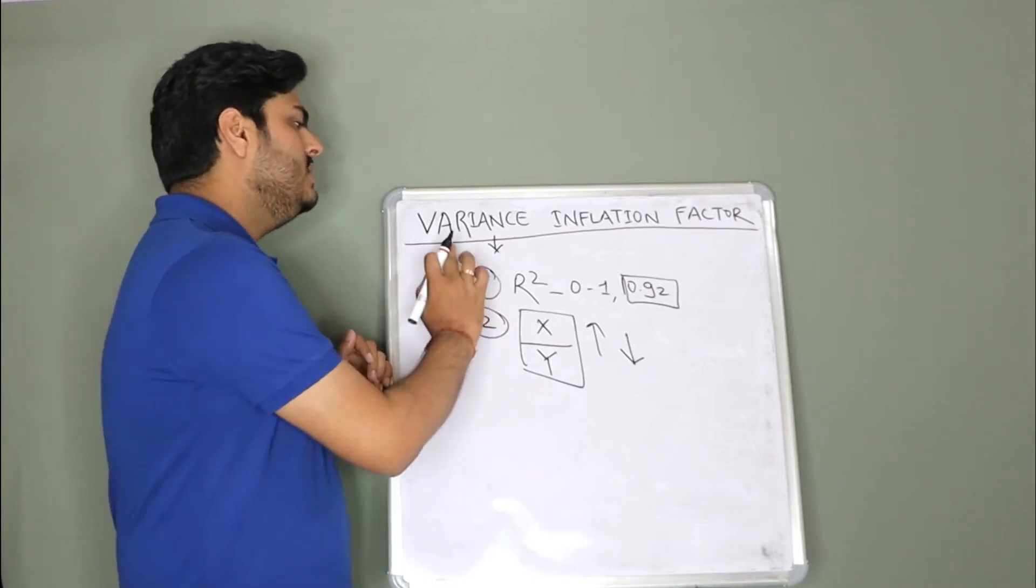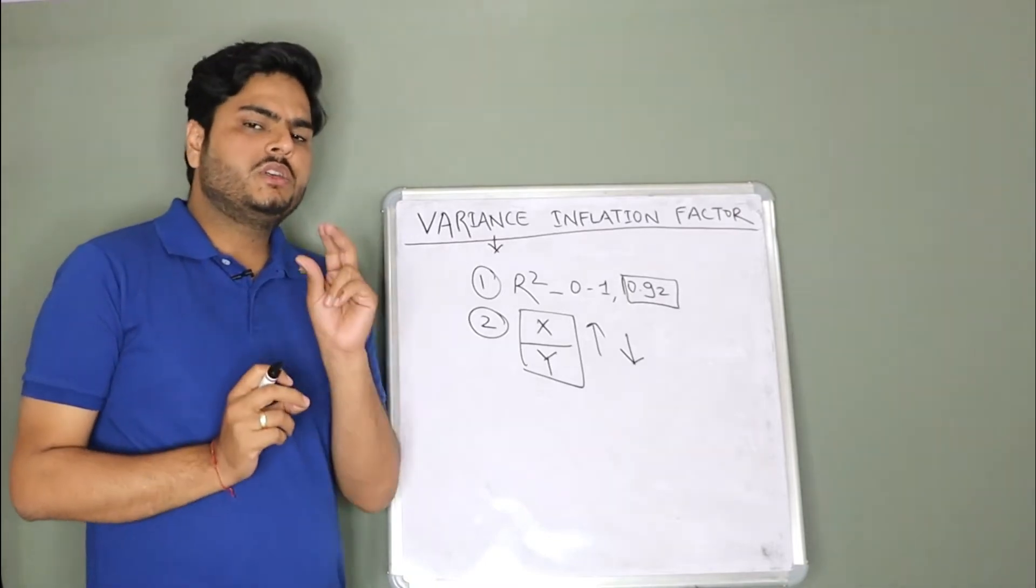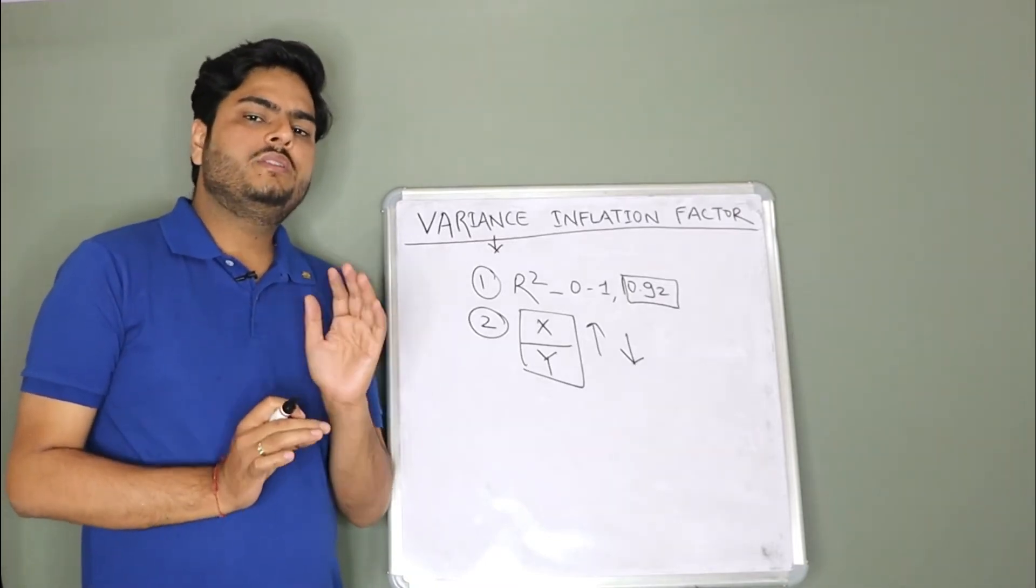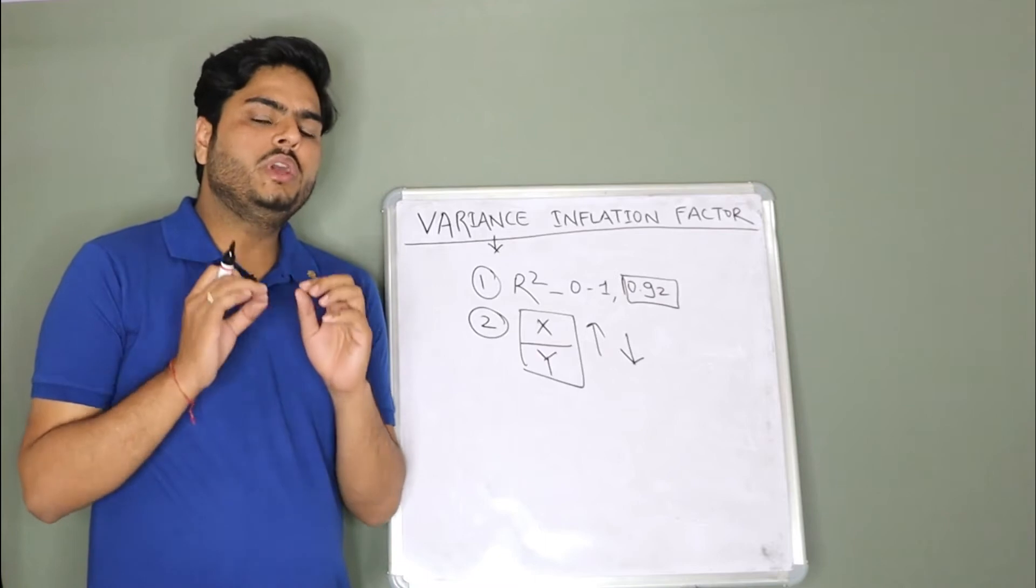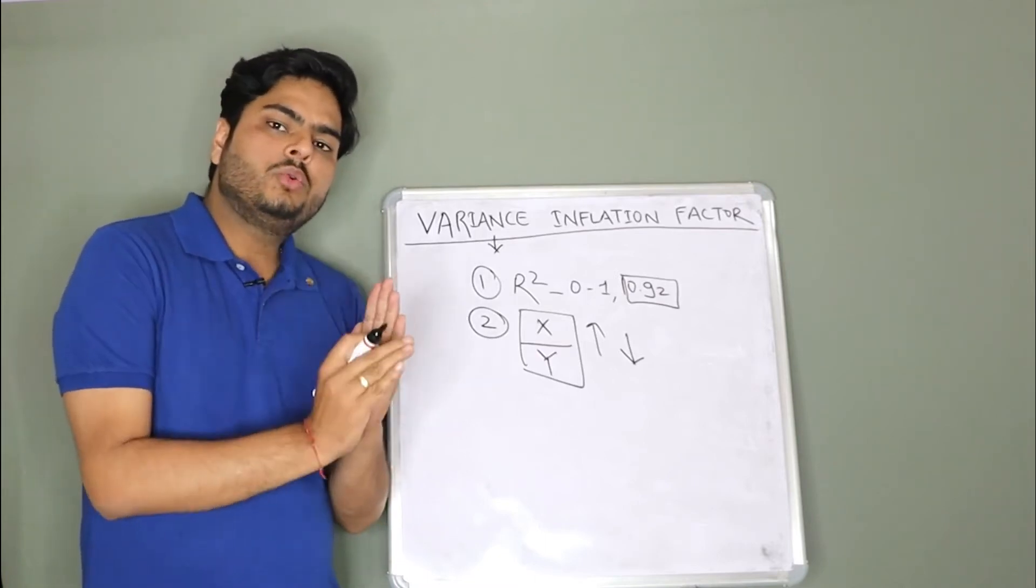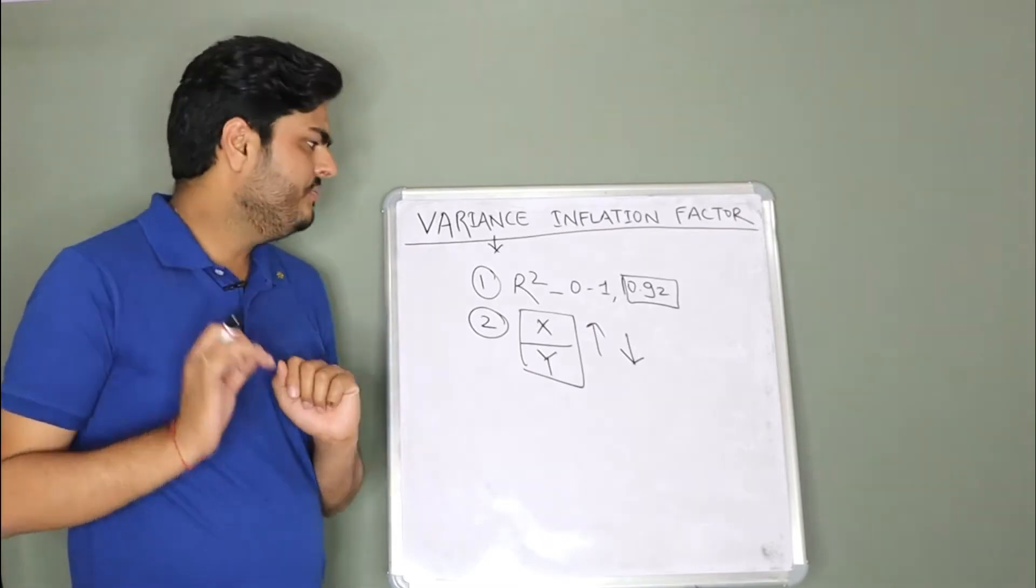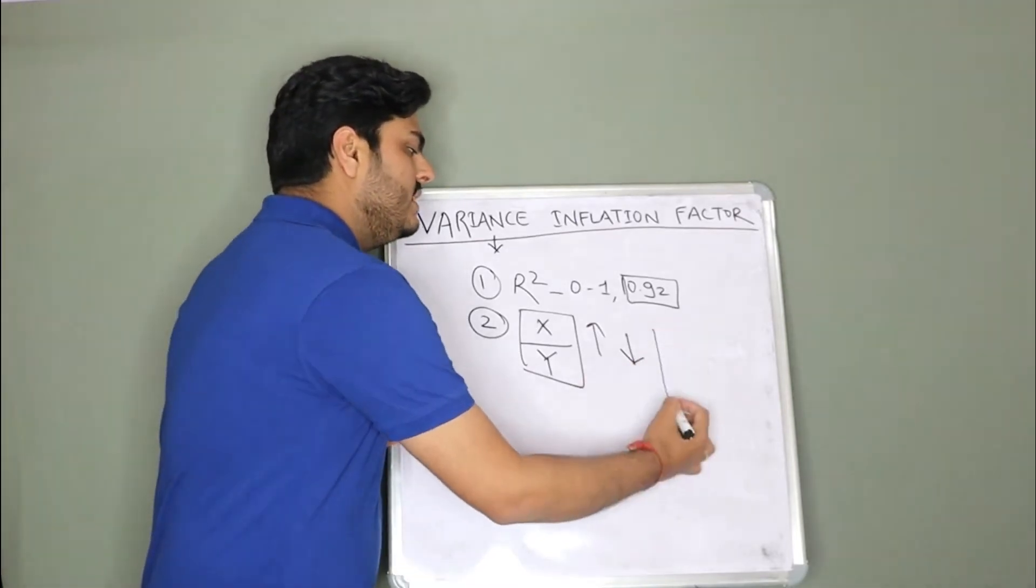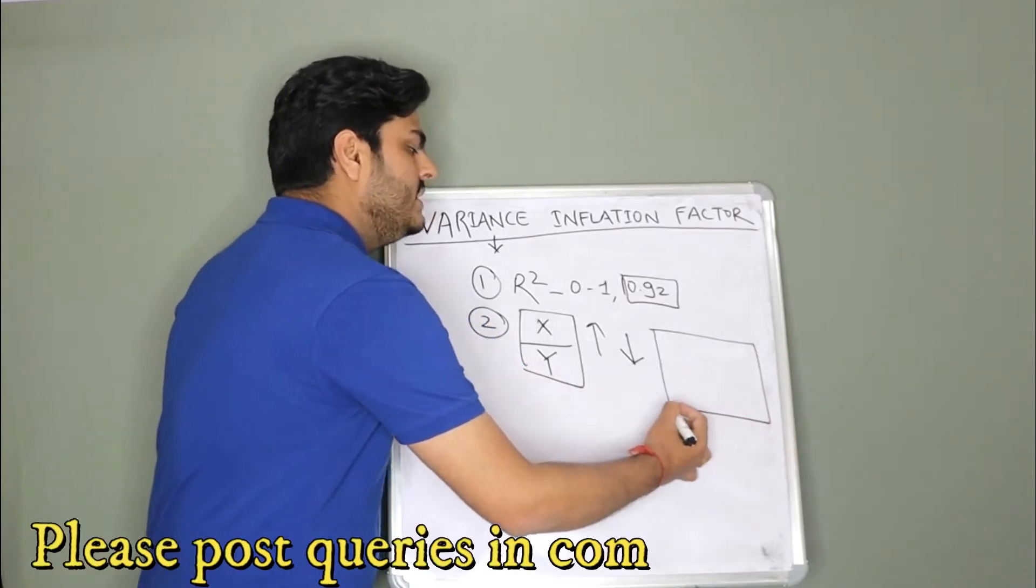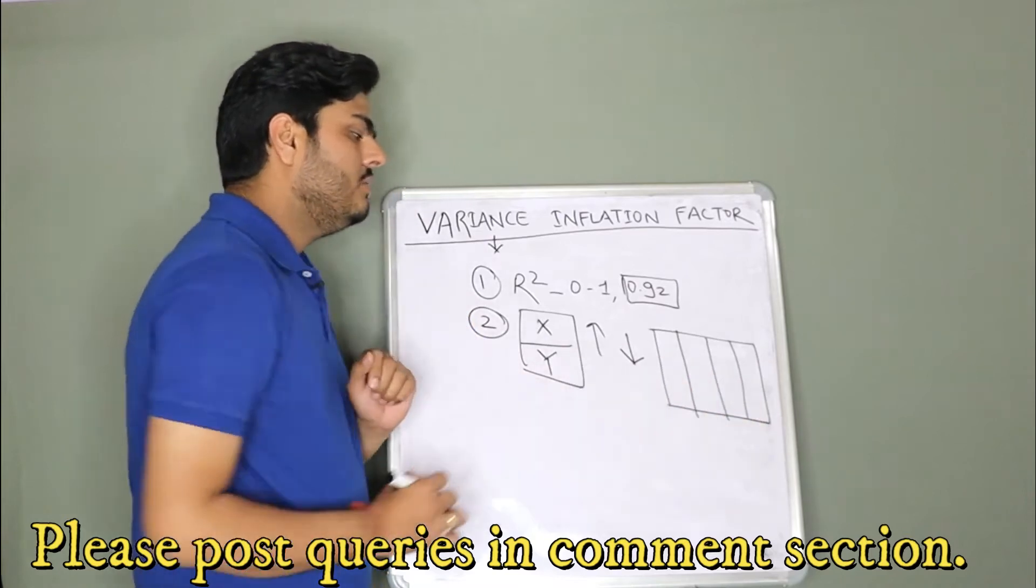Now let us understand what is variance inflation factor. Variance inflation factor is a term or is a measurement through which we can know which variables in the data are highly correlated with other variables. Let me give you a simple example. Let us say this is your data.